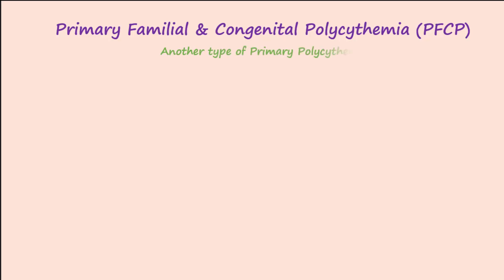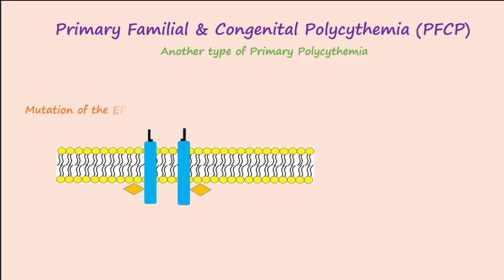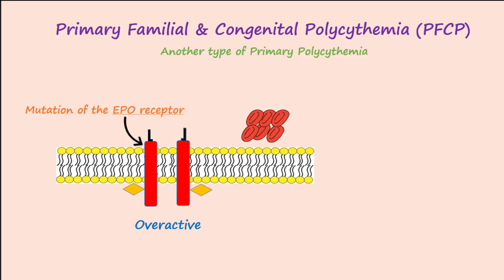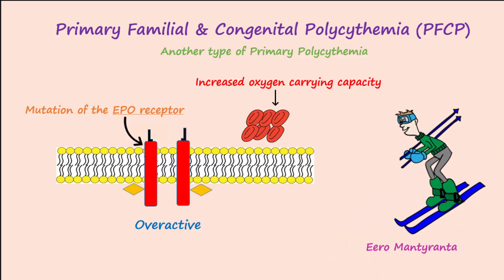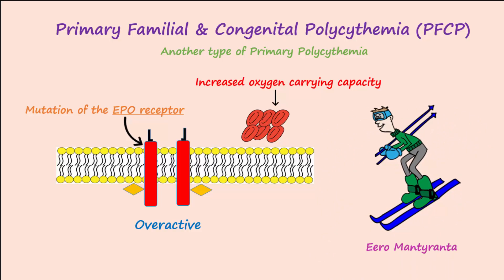Primary familial and congenital polycythemia, or PFCP, is another type of primary polycythemia. Instead of a mutation in the JAK signaling pathway, there is a mutation in the EPO receptor that leads to elevated RBCs and hemoglobin, imparting a 50% increase in the blood's capacity to carry oxygen. The famous Finnish cross-country skier Iro Mantiranta was found to have this EPO receptor mutation, which gave him a big advantage when competing in endurance sports.